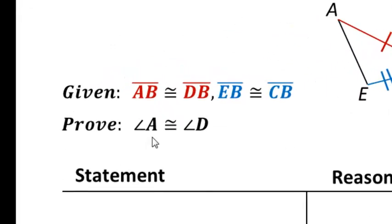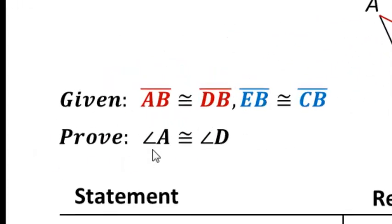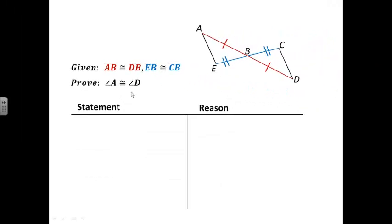Well in our previous proofs, in this line right here, we were proving that triangles are congruent. But look at this, we're now just proving parts of the triangle are congruent. So we need to prove these two triangles here are congruent, then we can use CPCTC.